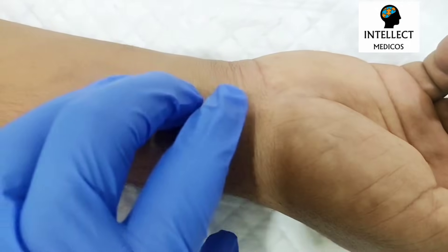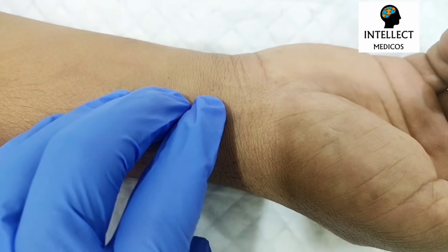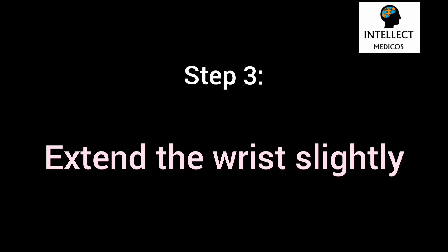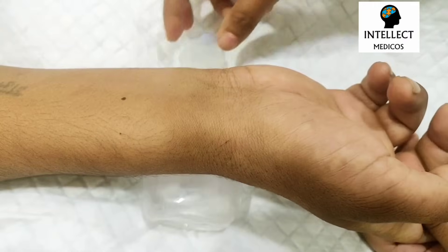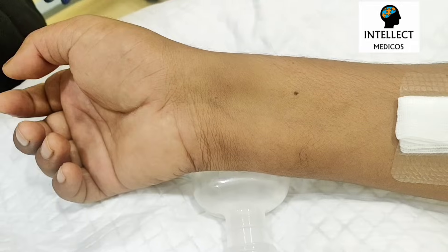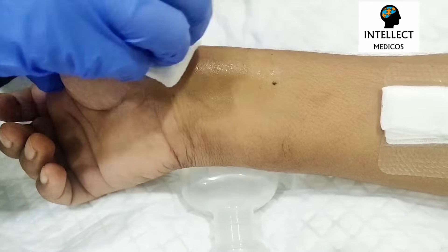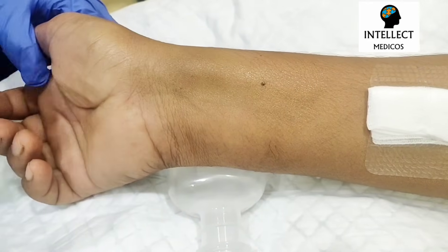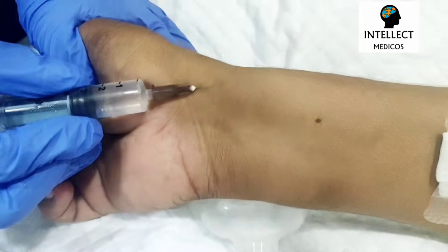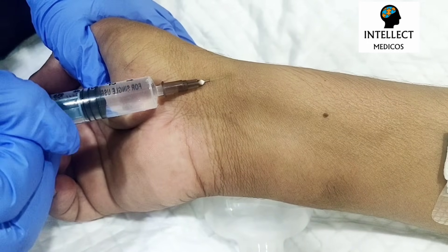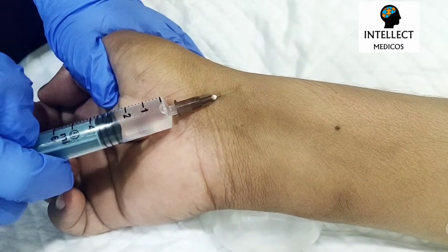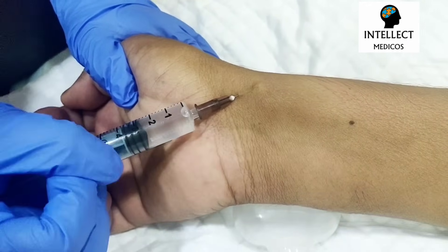Step 2: Palpate the radial artery using two or three fingers and identify its course. Step 3: Slightly extend the wrist using a normal saline or betadine bottle. Step 4: Clean the site in a circular manner with an alcohol swab or skin disinfectant. Step 5: Aspirate first, then infiltrate local anesthetic agent in a fanning manner — you can see the wheal forming.